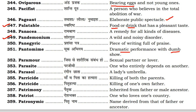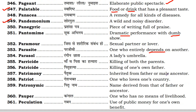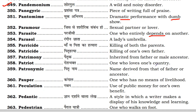Next is paramour. Paramour is a sexual partner or lover. Next is parasite. Parasite is one who depends on another — one who entirely depends on another individual.